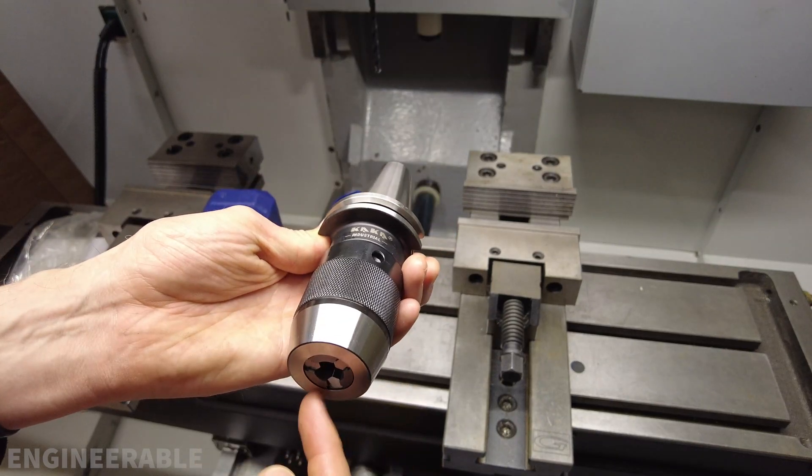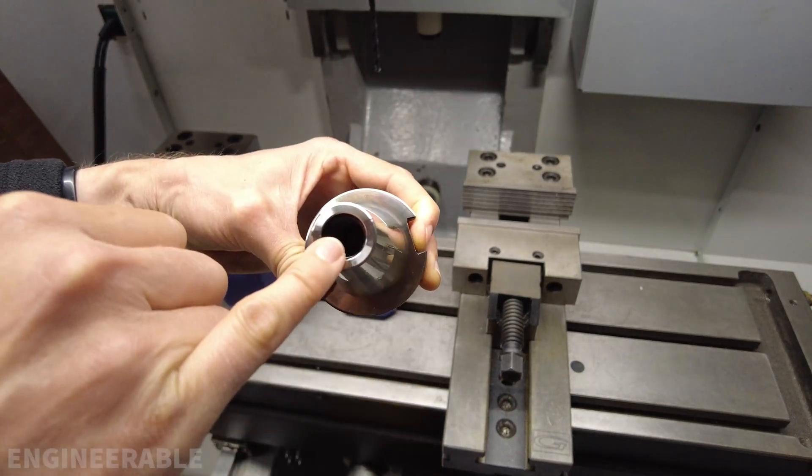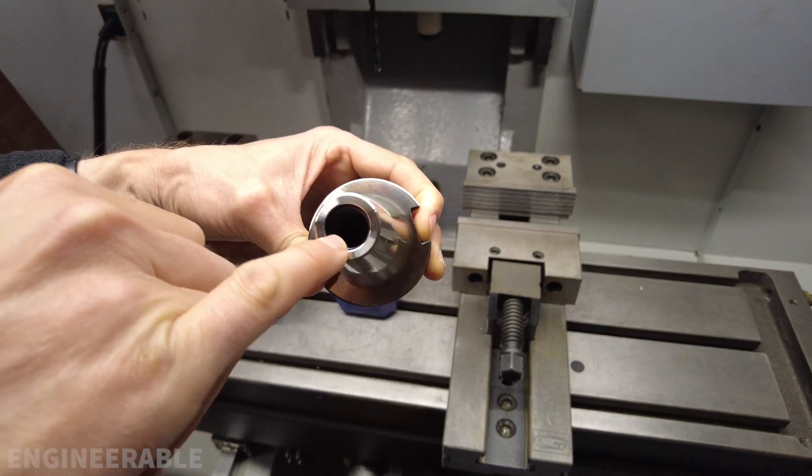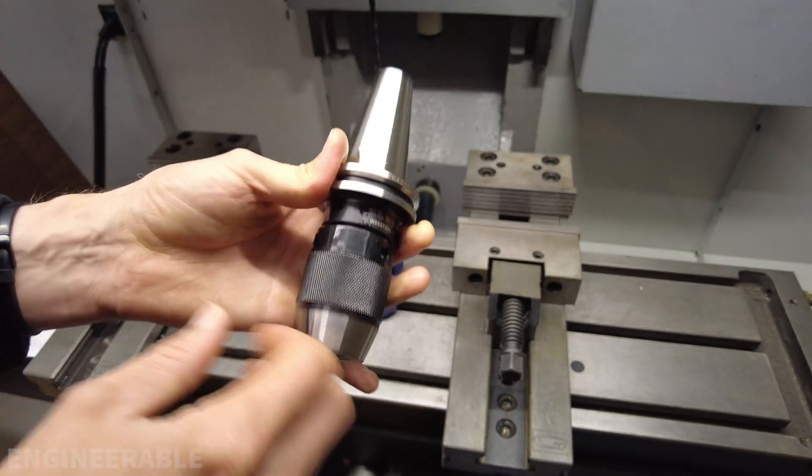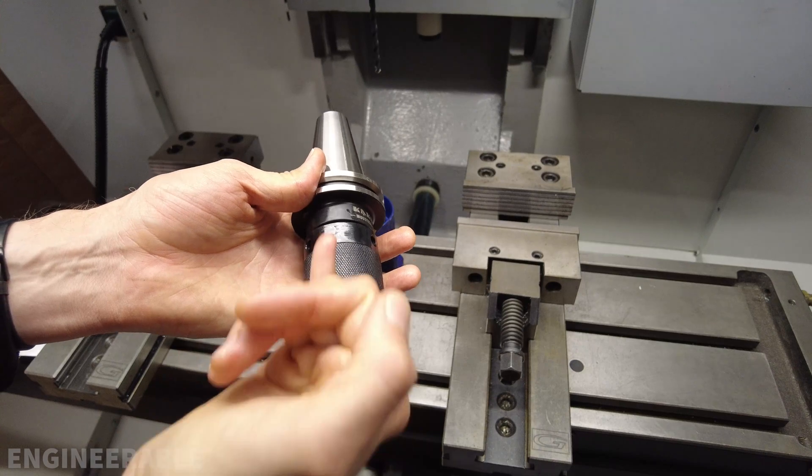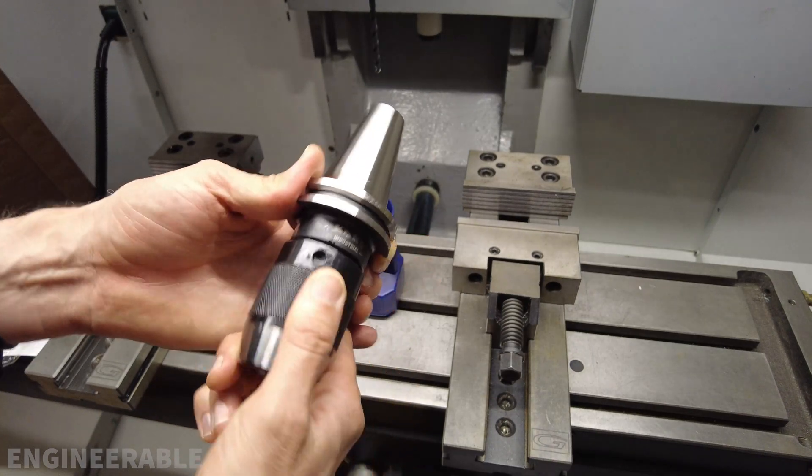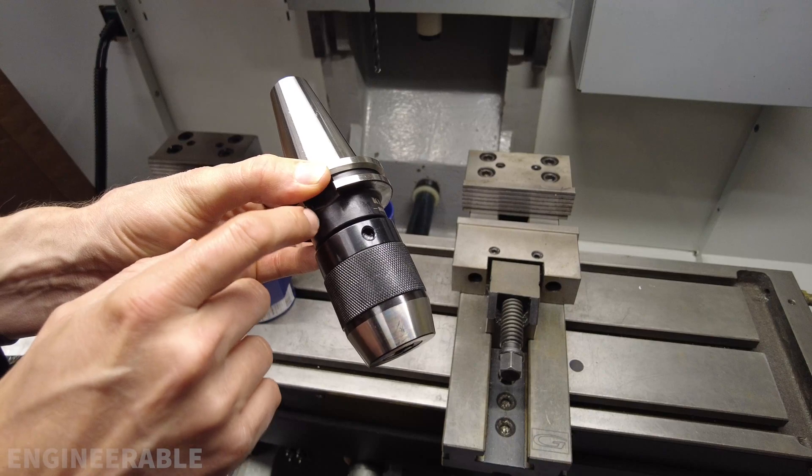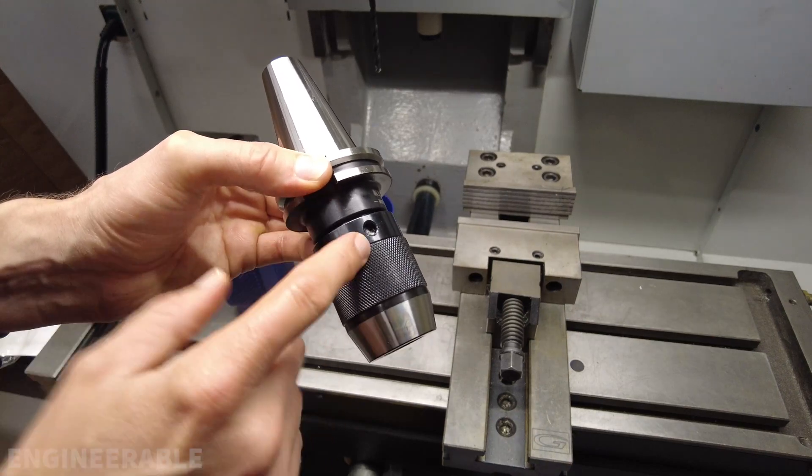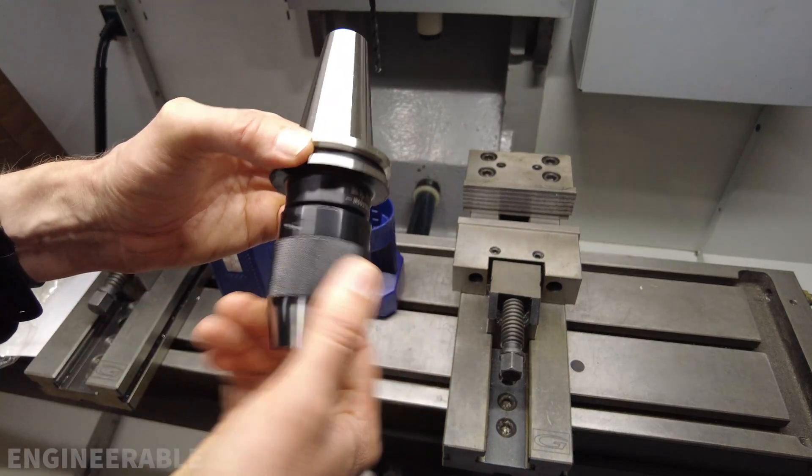There is a hex socket head cap screw bolt way down in there, and I assume that's what retains things in that direction. But this does look like an actual integrated shank in that it's purposefully designed to hold this specific design of drill chuck in there.